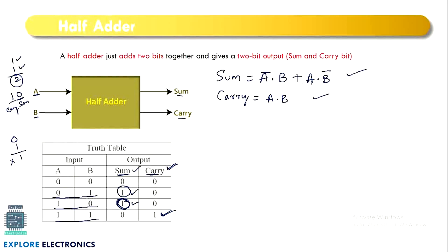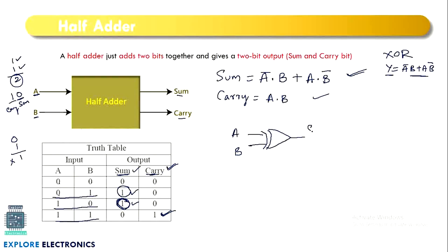The sum expression A̅B + AB̅ is the same as the XOR gate expression. Recall that the XOR gate expression is Y = A̅B + AB̅, which can also be written as A ⊕ B. So using inputs A and B through one XOR gate gives the sum. For carry, it is generated by the logical AND of A and B, so using the same inputs A and B through one AND gate gives the carry. This is the gate-level circuit for the half adder.